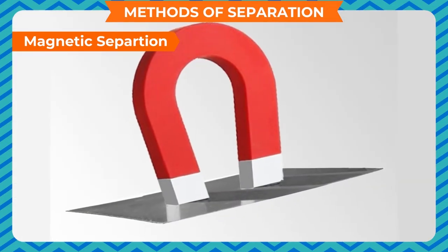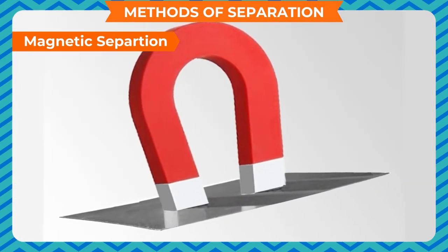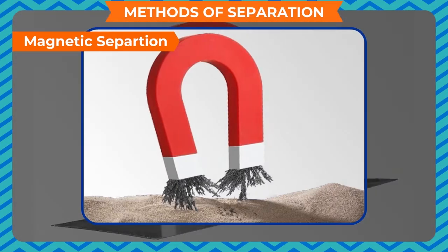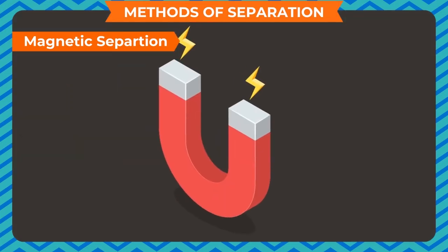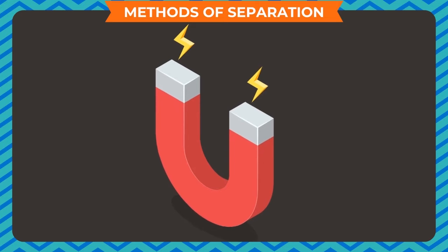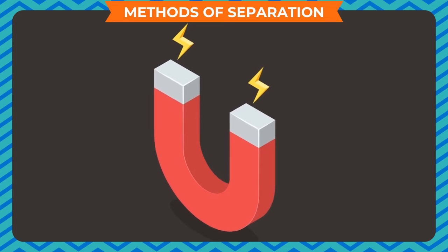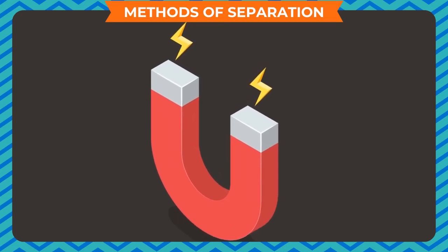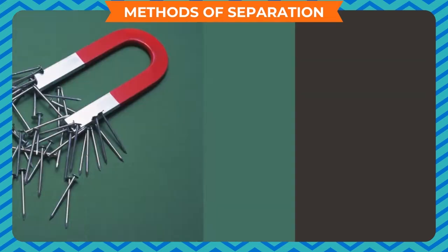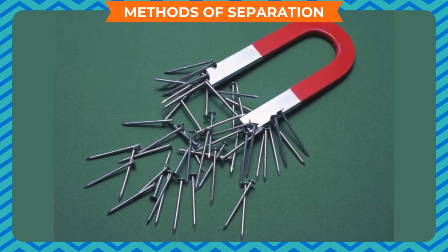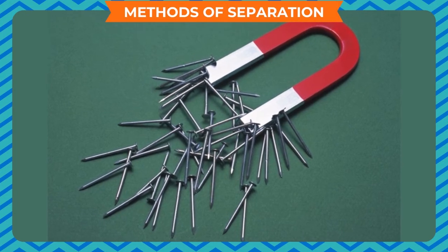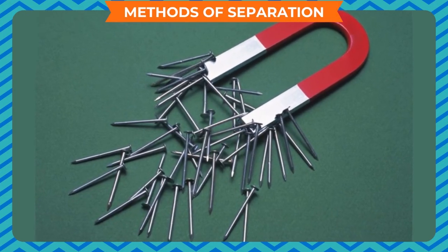Magnetic separation: iron gets attracted towards a magnet. If you move a magnet over a mixture of iron filings and sand, the iron particles cling to the magnet while sand is not attracted and is left behind. A method in which a magnet is used to separate magnetic impurities from a mixture is called magnetic separation.